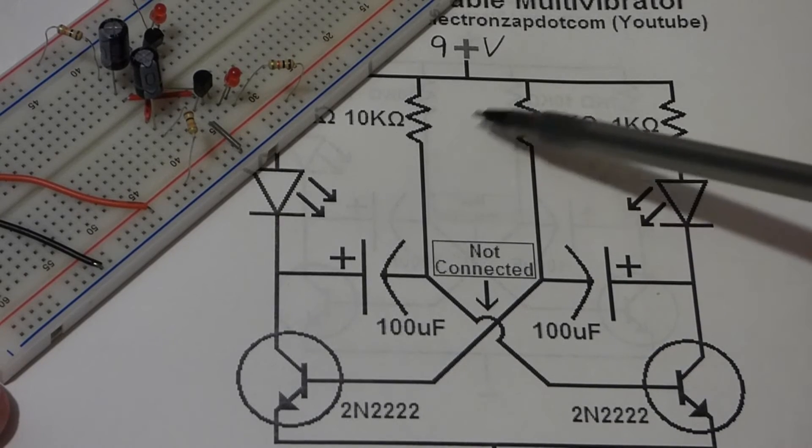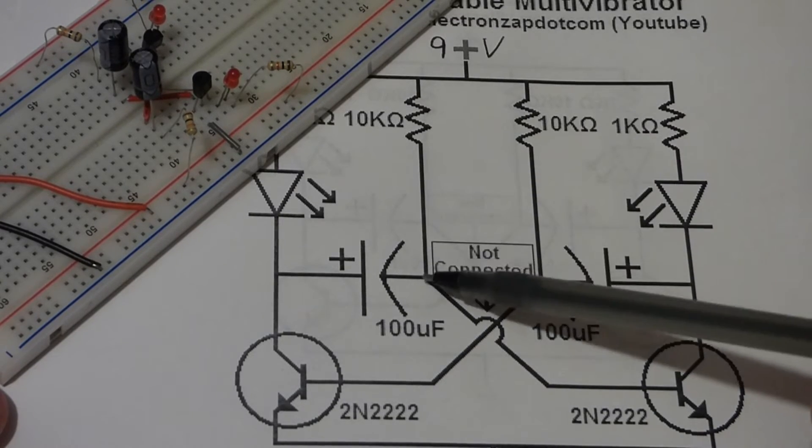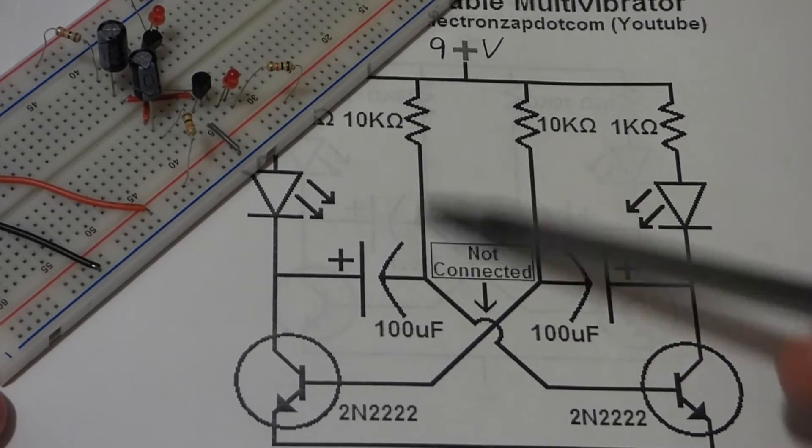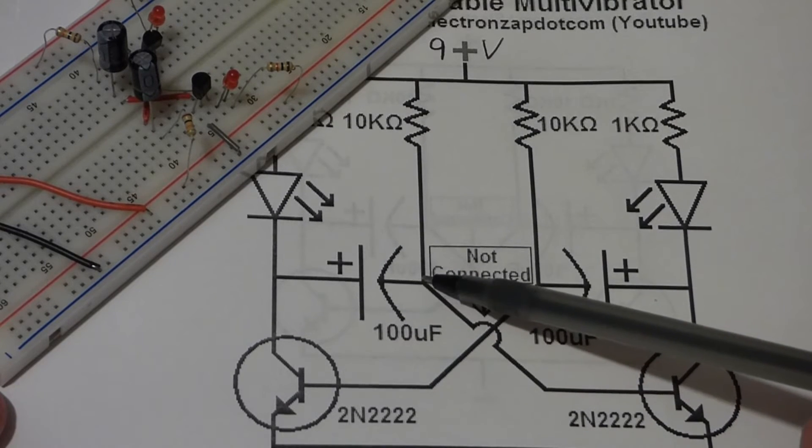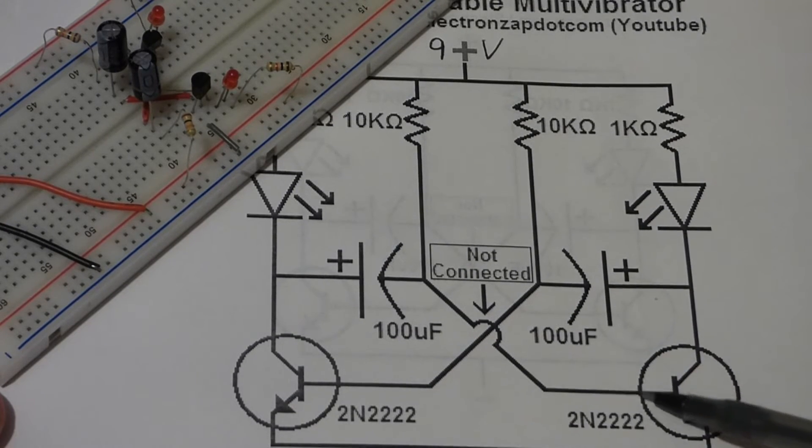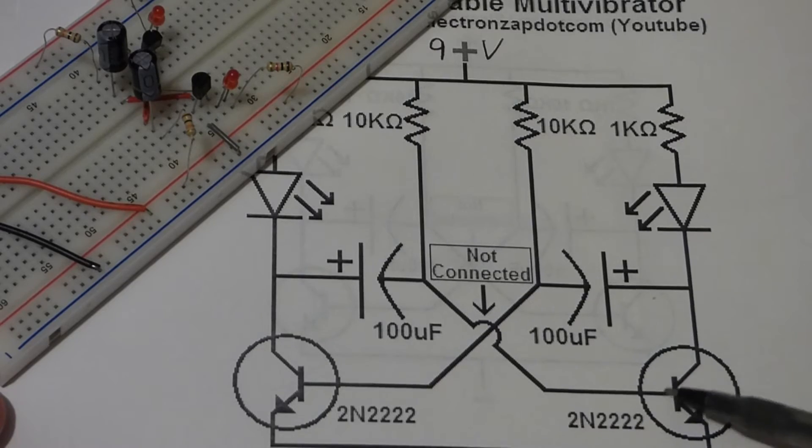we have these resistors here, which connect directly to positive. But then, the other side, it's the negative side of the capacitor. And then, the opposite side, transistor base, the middle pin.